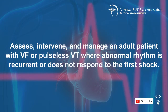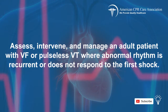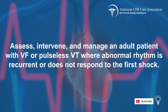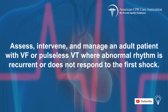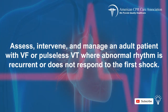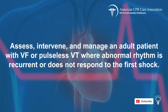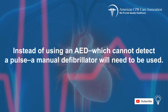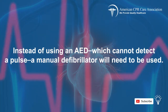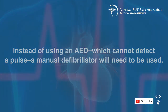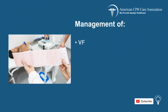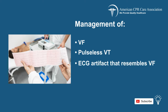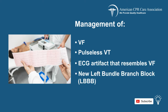This section and the following sections will cover the assessment, intervention, and management of an adult with VF or pulseless VT where the abnormal rhythm is recurrent or does not respond to the first shock. Instead of using an AED, which cannot detect a pulse, a manual defibrillator will need to be used. We will cover the management of VF or pulseless VT, the ECG artifact that resembles VF, and the new left bundle branch block.